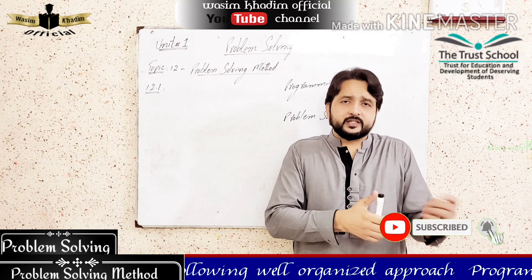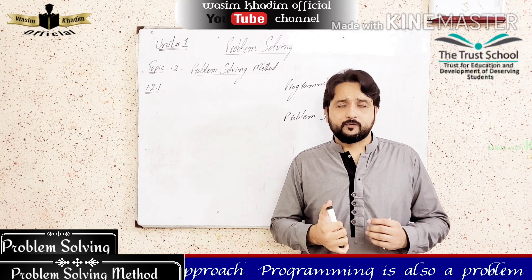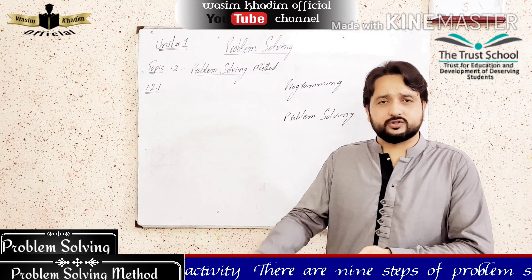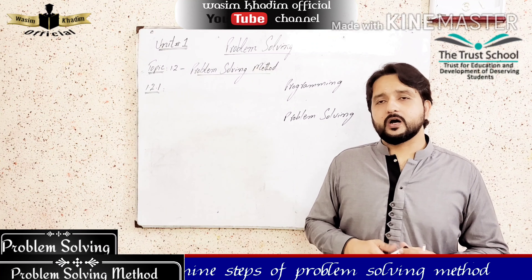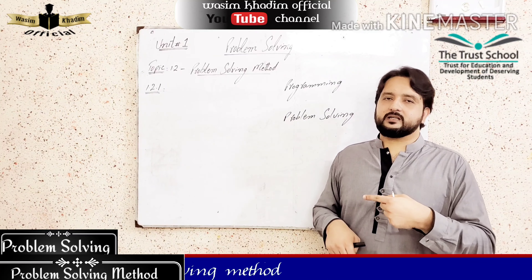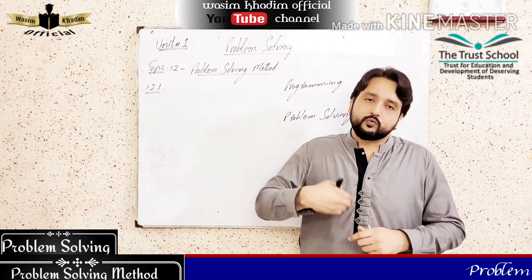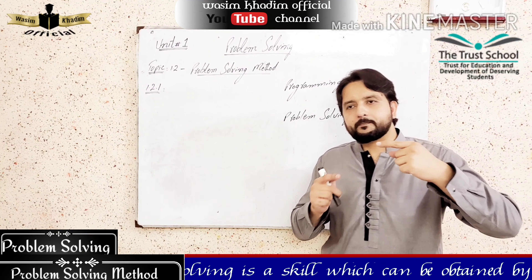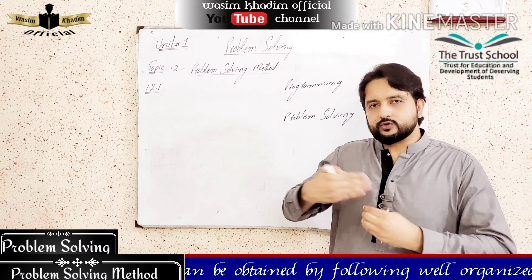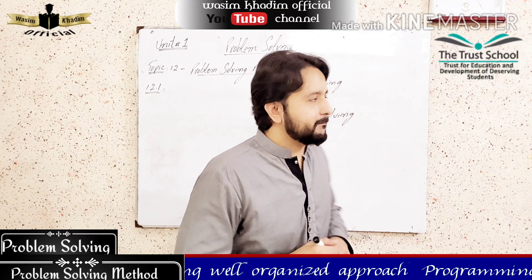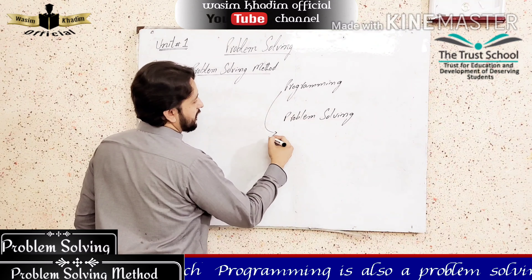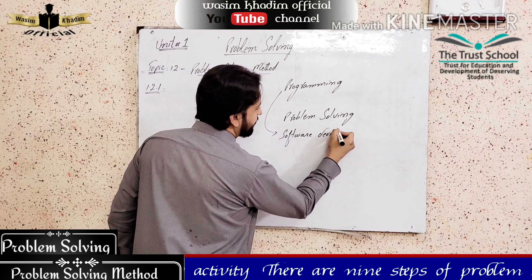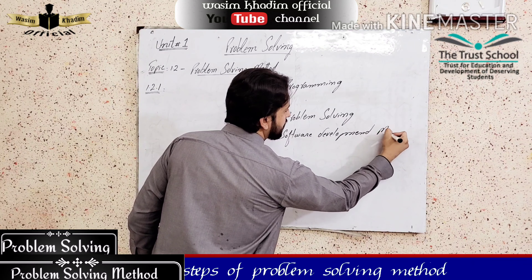There are different fields in which problems are solved, and they can use their own related approach. For example, problems in engineering and scientific fields use their own methods. But we have to discuss specifically computer science problems — how do we solve them? Programmers use a method called the Software Development Method.